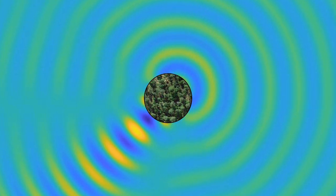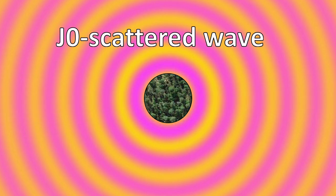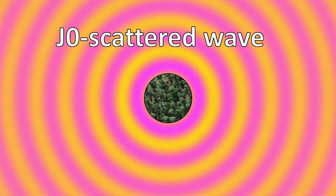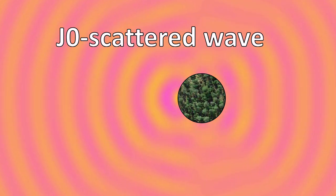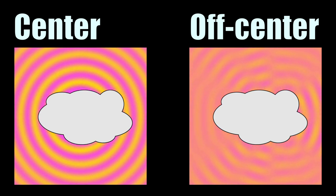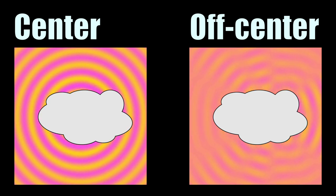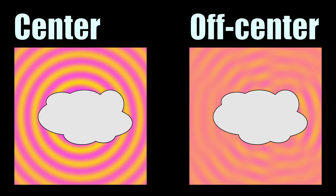Summing up all the scattered waves for different wind directions is called a J0 probing. The result is a J0 scattered wave, which is a mathematical construction not occurring in the real world. For an off-center island, the J0 scattered wave is non-symmetric. Here are two islands imaged under cloudy conditions — we can't see the islands directly, but the J0 scattered waves reveal information about their locations.